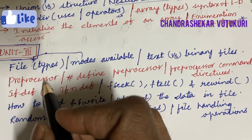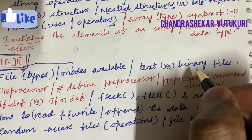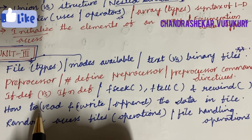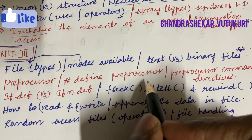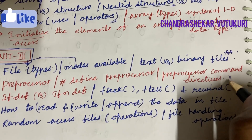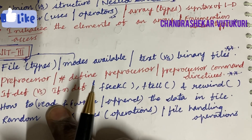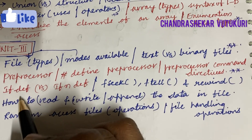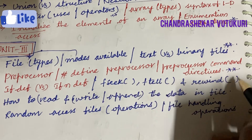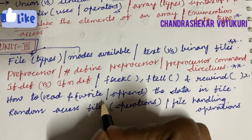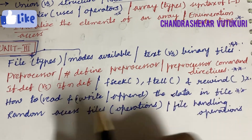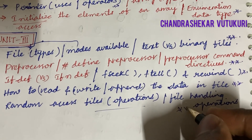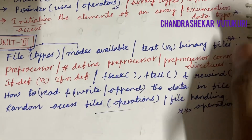Unit 3 is all about files — the types and modes of files available. Text versus binary file may be one of the top questions. Preprocessors and preprocessor command directives may also be important. You will get two small two-mark questions and one ten-mark long question split as five-five. Do not expect a direct ten-mark question. #ifdef versus #if, and fseek, ftell, and rewind, may be short questions. How to read, write, and append data in a file is a likely long question. Random access file operations and file handling operations are top questions for question number four.